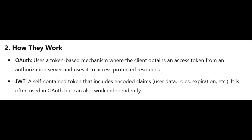How they work — OAuth uses a token-based mechanism where the client obtains an access token from an authorization server and uses it to access protected resources. JWT is a self-contained token that includes encoded claims such as user data, roles, and expiration. It is often used in OAuth but can also work independently.